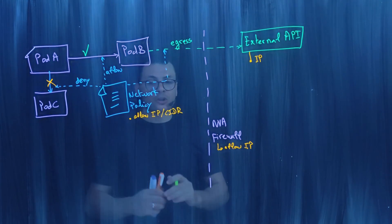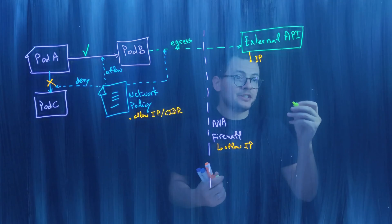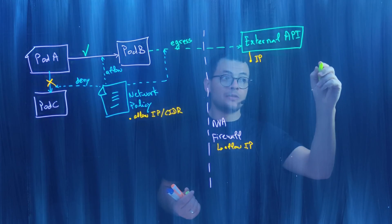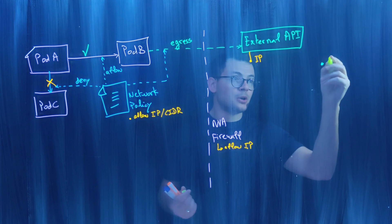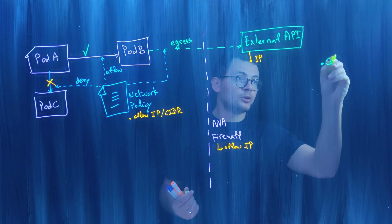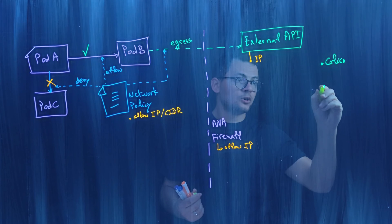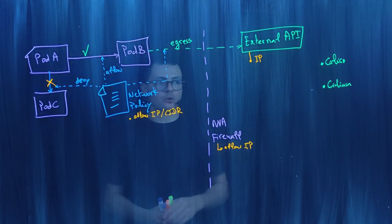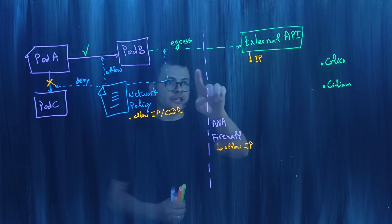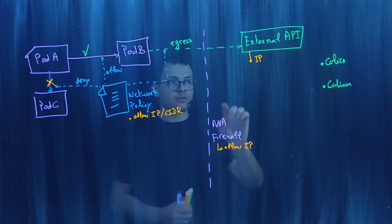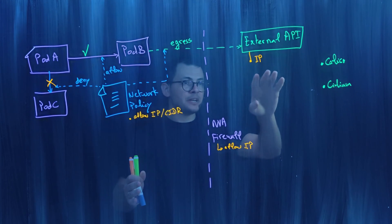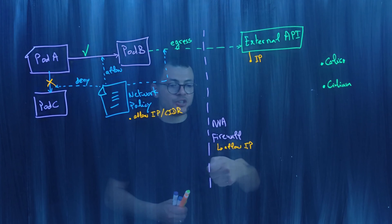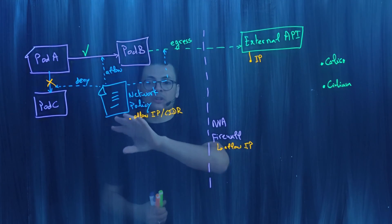This is native to Kubernetes network policy. You can implement it using Cilium or even before Cilium, the Calico network policy or Cilium network policy. Now here we still have an issue. If we filter egress based on this IP address for the external API, we know those external APIs will have changing IP addresses. So we need to keep changing those IPs in our network policies.